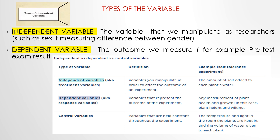Independent versus dependent variables. Experiments are usually designed to find out what effect one variable has on another. For example, the effect of salt addition on plant growth. You manipulate the independent variable — the one you think might be the cause — and then measure the dependent variable — the one you think might be the effect. You will probably also have control variables that you hold constant in order to focus on your experimental treatment.